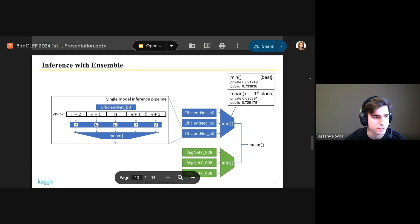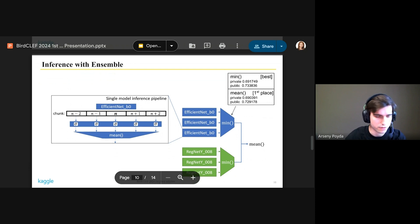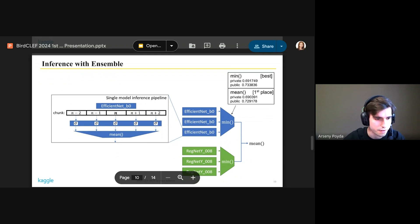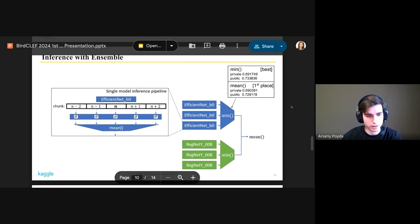Here you can see the inference pipeline. It consists of six models as we said. The pipeline of one model is presented on the slide. We take a model and use it for five overlapping chunks. Then we take probabilities after sigmoids and we averaged them. So it's like a smoothing between adjacent chunks.